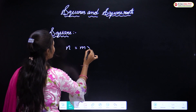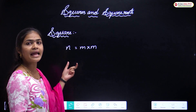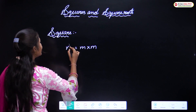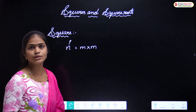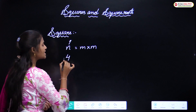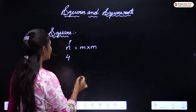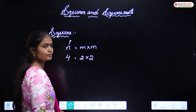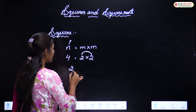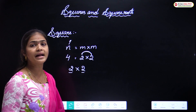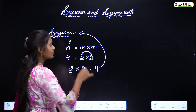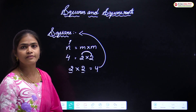For example, if n can be expressed as m into m, then we will call n a square. Take the example of four: four can be written as two into two. So a number which is the same number multiplied by itself two times - its product is said to be a square.